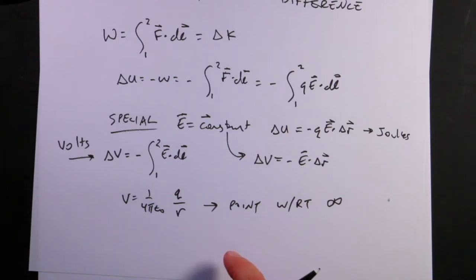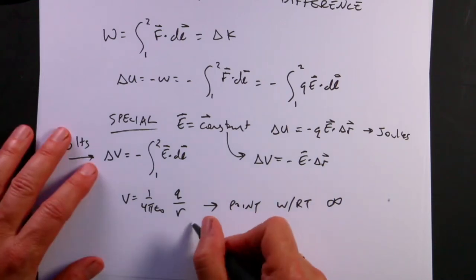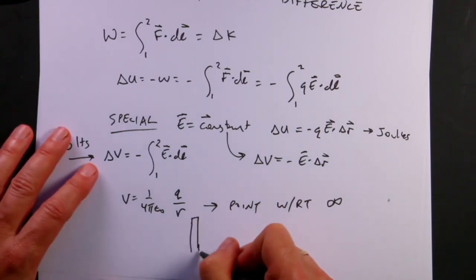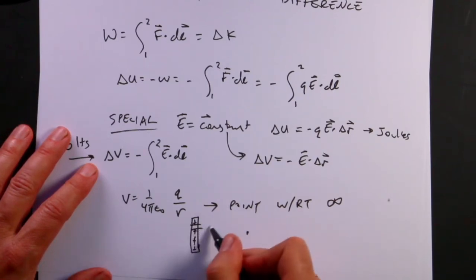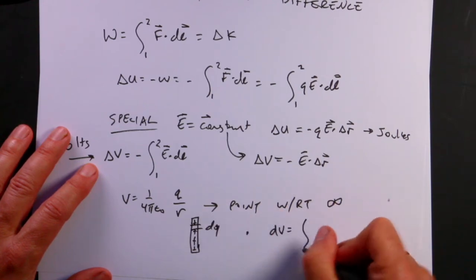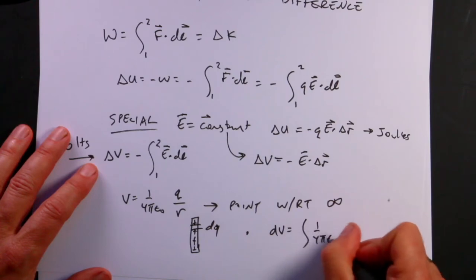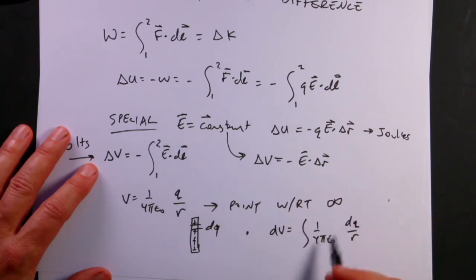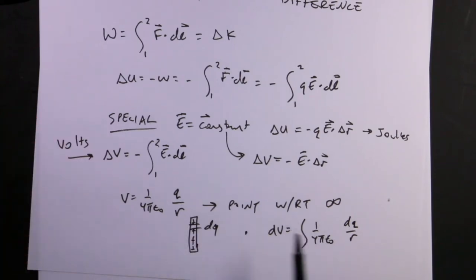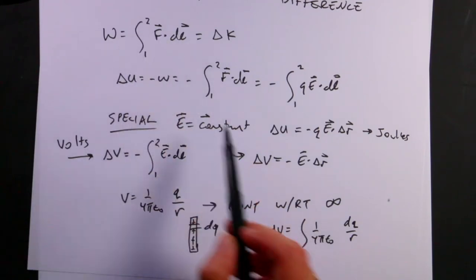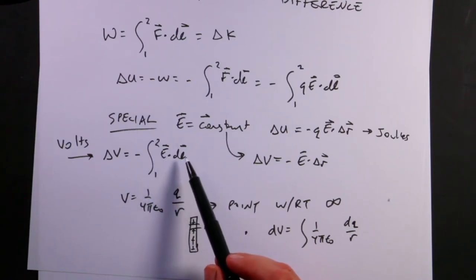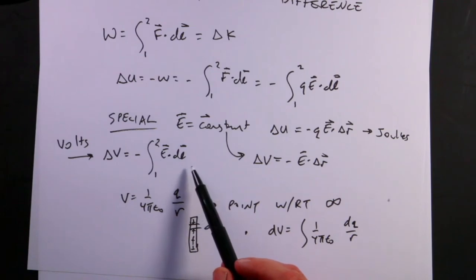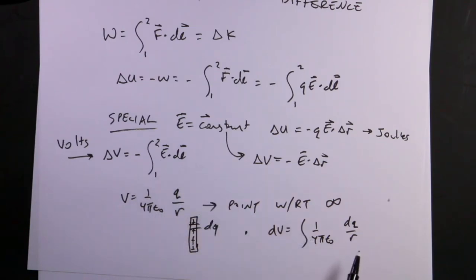Electric potentials also obey superposition. For a charged rod, break into pieces dQ, then dV = (1/4πε₀)(dQ/R), and integrate. This is actually easier than the electric field case because once you do the E·dL dot product you get a scalar value — no need to worry about angles and vector components.